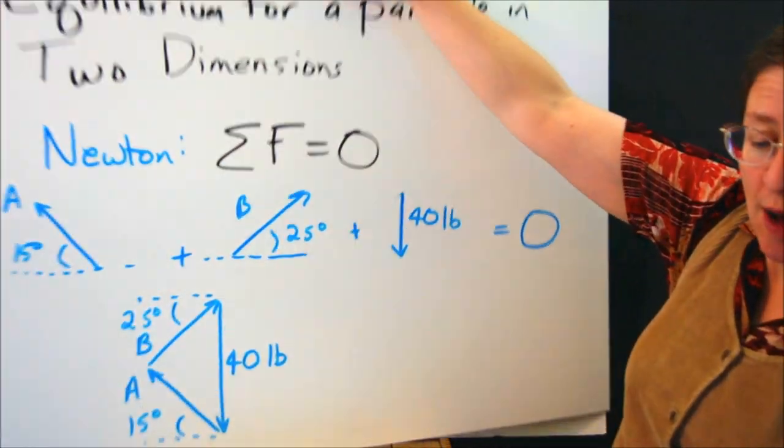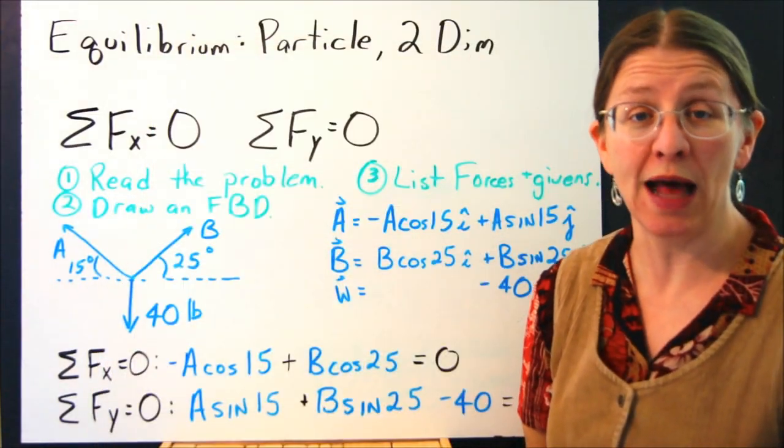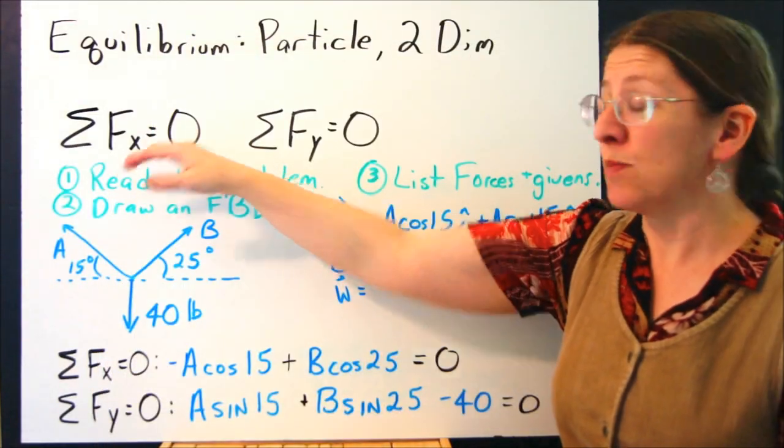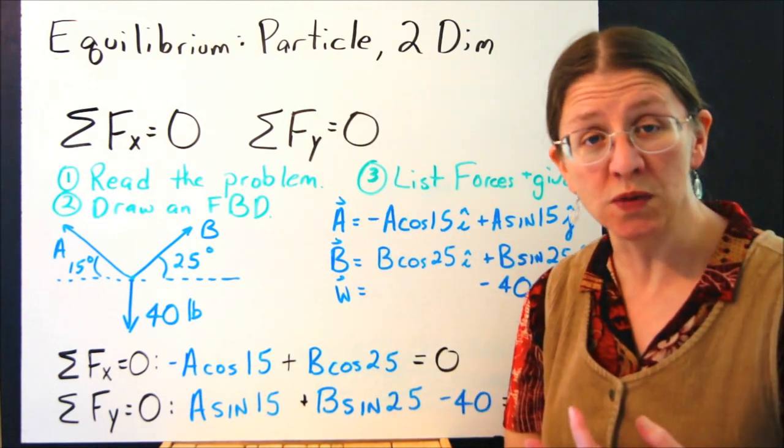In general, that's a little bit more complicated than what we always want to do, especially as we get to more and more forces that we're adding up. What's more common is to say that the sum of the forces in x equals zero, and the sum of the forces in y equals zero.